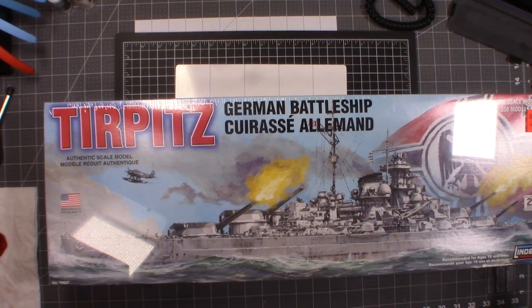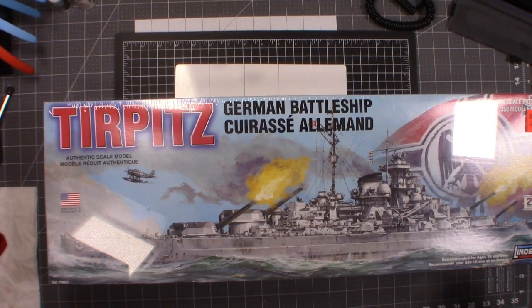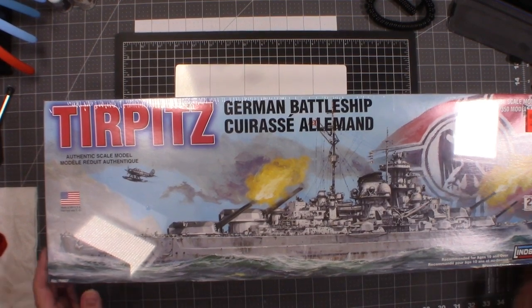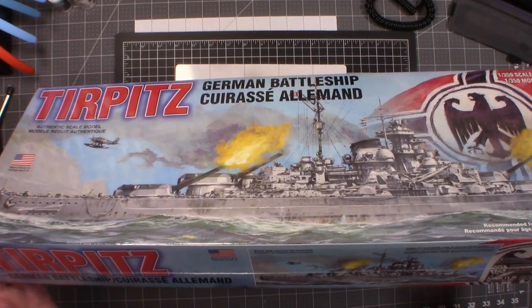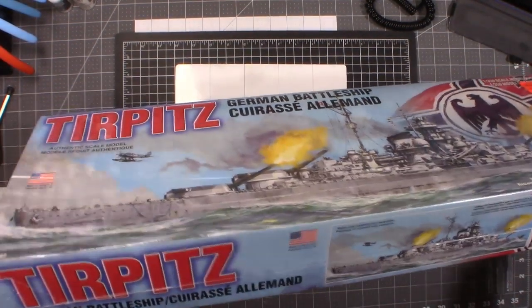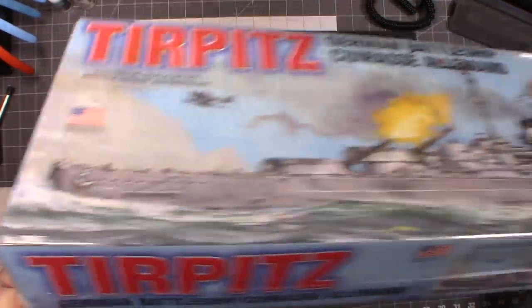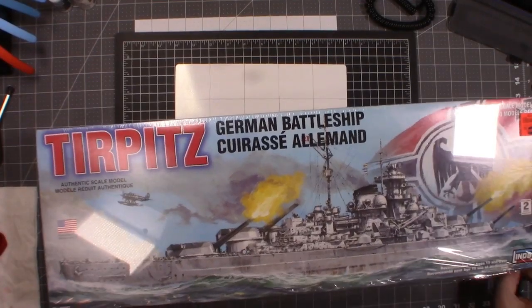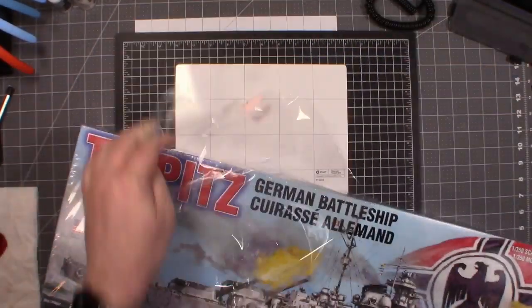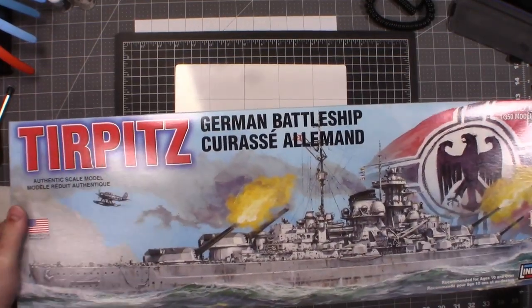It is in one 350th scale model. So we're going to go ahead and just build this live today, see how it is. No upgrades, none of that good stuff. This company is Lindbergh. It is made in the USA, which is something you don't really see on model kits. I have not opened it yet. I have no idea what's inside. So we are going to check this out together and see what we get ourselves into.